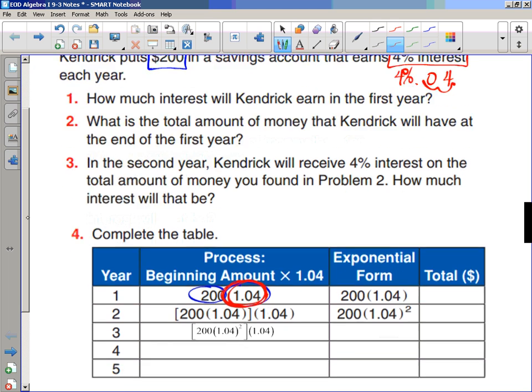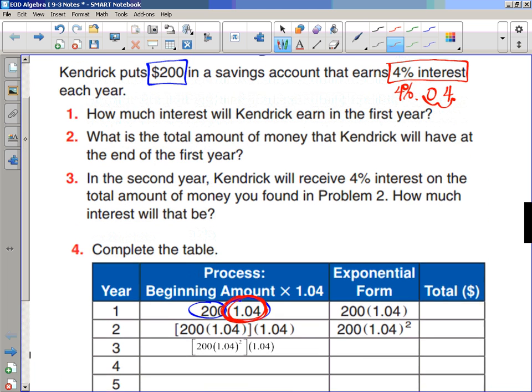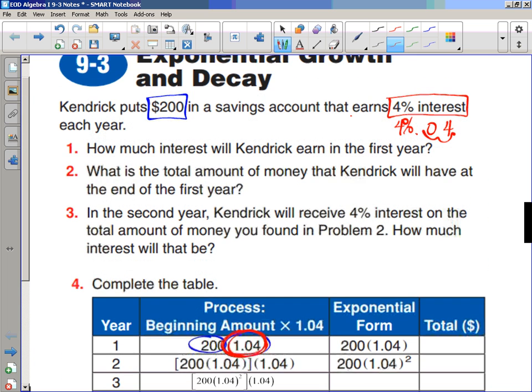Now, the reason why it is 1.04 is because we want to take what we have and add 4% to it. Later, we're going to talk about what happens when you want to subtract or take away a certain percent of something. But if we want to increase or add 4% each year, which that's what this means, earns, that means add, or increase. If it said something like pay or is a fine, something like that, that would be subtracting.